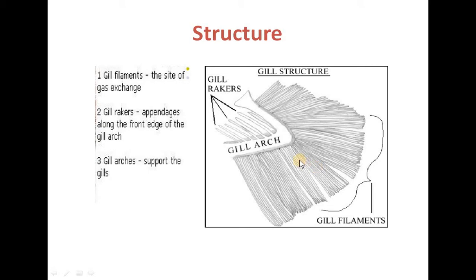The second is the gill rakers, which are appendage-like structures present at the front edge of the gills. The third is the gill arches, which are the structures that provide support to the gills.